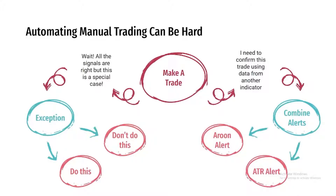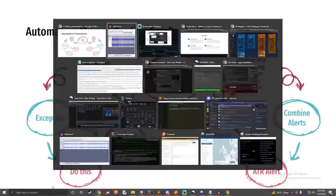Taking a single signal and placing a trade is often too simple. Even the most robust indicators don't always have all the right data. And even if you took several of them and combined them all, simple automation still couldn't provide the same exceptions and situation handling a human would.